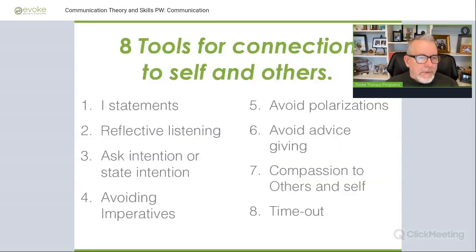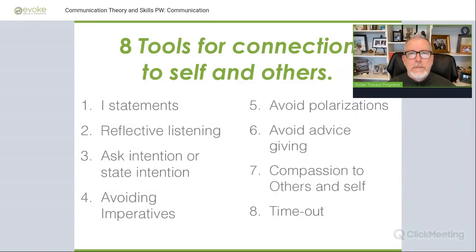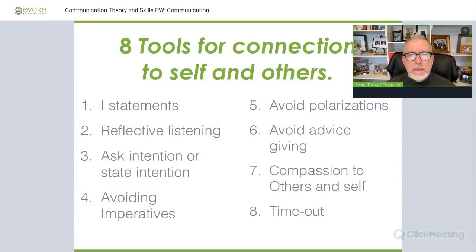Beyond I-statements and reflective listening, there's asking — or stating — the intention of the person sharing with you. In my opinion, this is the most undertaught and underutilized skill on this list. If implemented, it could do so much to improve conflict in relationships. But most people aren't conscious of their intention — they're so quick to react because of their own trauma responses. Number four: avoid imperatives like 'you should,' 'you ought to,' 'you must' — good, bad, right or wrong, should, ought. Those tend to provoke defensiveness and fall under the category of attack statements instead of ownership.